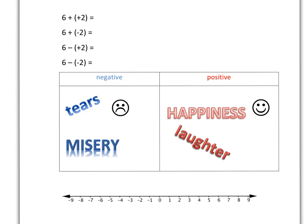For example, adding something positive to my life — adding happiness and laughter — obviously I'm just adding to my life. It's going to get better. And 6 plus 2 we know is just 8. Similarly, if I'm adding something negative to my life — adding tears, misery, unhappiness — my life is getting less, it's getting worse. In other words, adding all that negative stuff is taking away from my life.